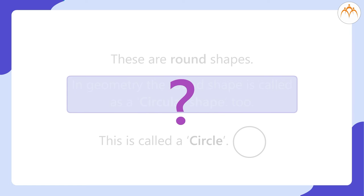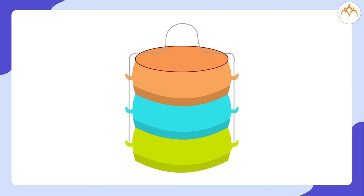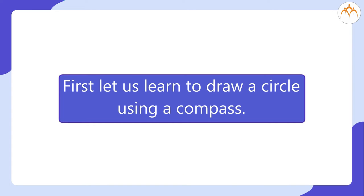Well, have you seen circle-like shapes? A dial of a wall clock, a bangle, lid of a tiffin box. First, let us learn to draw a circle using a compass.